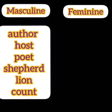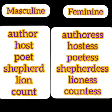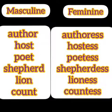We simply add -ESS at the end of each masculine noun. Author → authoress (A-U-T-H-O-R-E-S-S). Host → hostess (H-O-S-T-E-S-S). Poet → poetess (P-O-E-T-E-S-S). Shepherd → shepherdess (S-H-E-P-H-E-R-D-E-S-S). Lion → lioness (L-I-O-N-E-S-S). Count → countess (C-O-U-N-T-E-S-S).